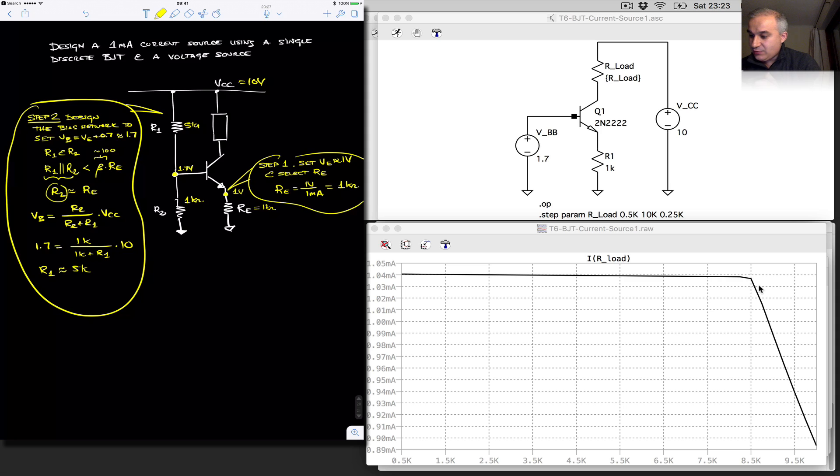So we have here 5k and 1k. One way to think about it is that what we have done, if you do the Thevenin equivalent, looking back from the base, this is equivalent to the 1.7 volts here, with a small voltage drop, and then still having your RE, etc.